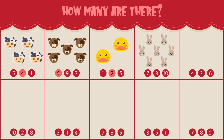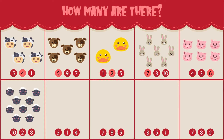How many rabbits do you see? There are seven rabbits. How many pigs do you see? There are six pigs. How many sheep do you see? There are ten sheep.